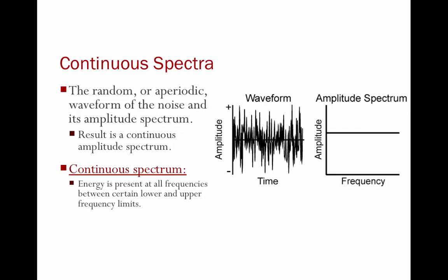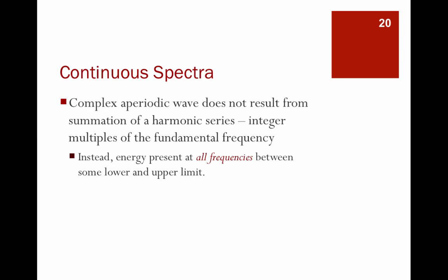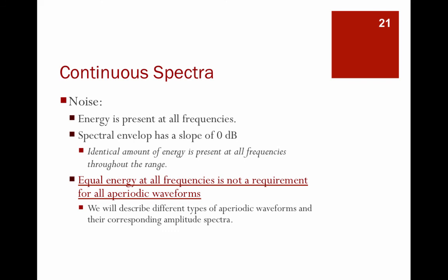With our aperiodic wave — with noise — noise is a mess. There is energy everywhere. Because there is energy at every frequency, we have a continuous spectrum. That straight horizontal line on the amplitude spectrum indicates energy at every frequency. The waveform for an aperiodic wave looks like a mess, but the amplitude spectrum is just a straight line. There is no harmonic relationship. This is called a continuous spectrum — energy is present at all frequencies, with no roll-off rate and an identical amount of energy at every frequency in the range.